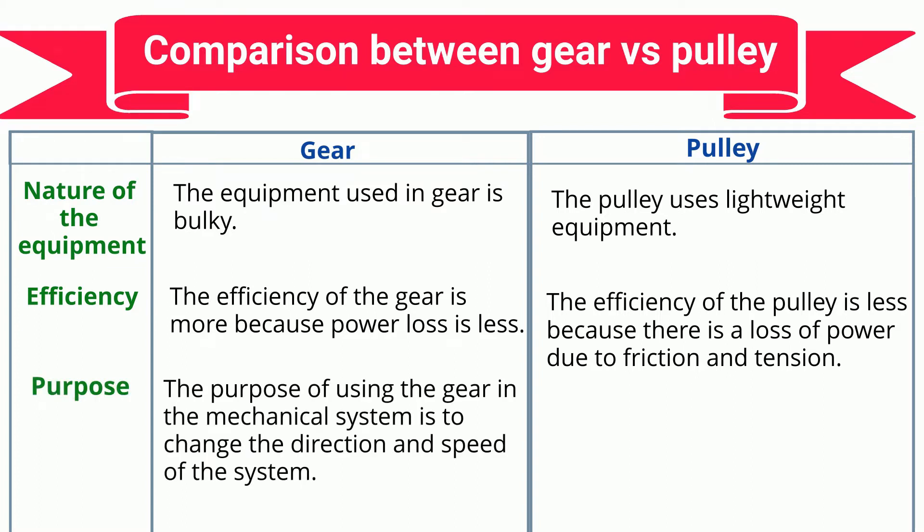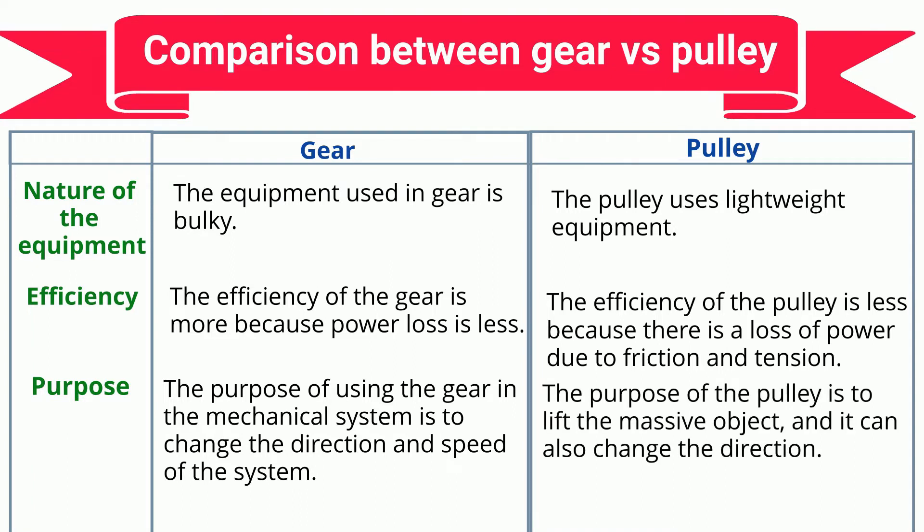Purpose: The purpose of using gear in a mechanical system is to change the direction and speed of the system. The purpose of the pulley is to lift massive objects, and it can also change direction.